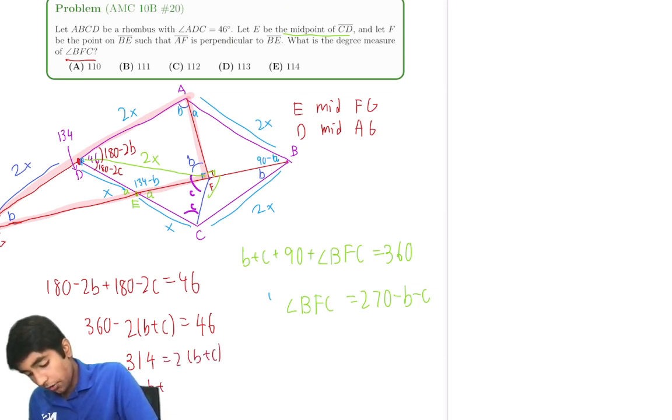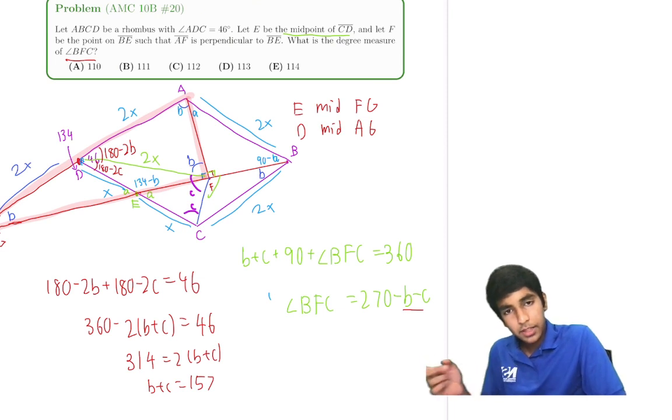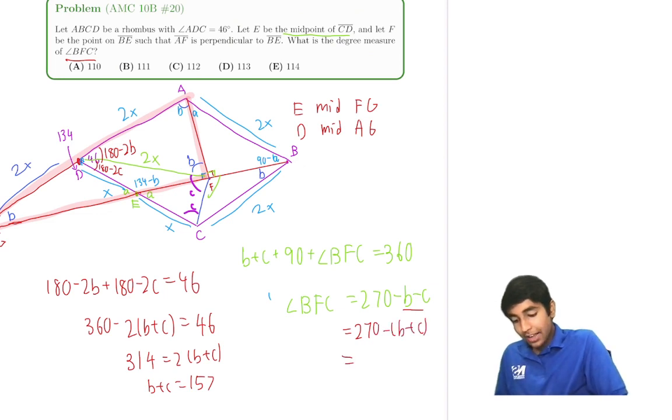314. That means 314 is 2 times (B plus C). So B plus C is 157. Isn't that the exact same thing there? B plus C, this is equal to 270 minus (B plus C). So this is just 270 minus 157, 113. Oh wow.